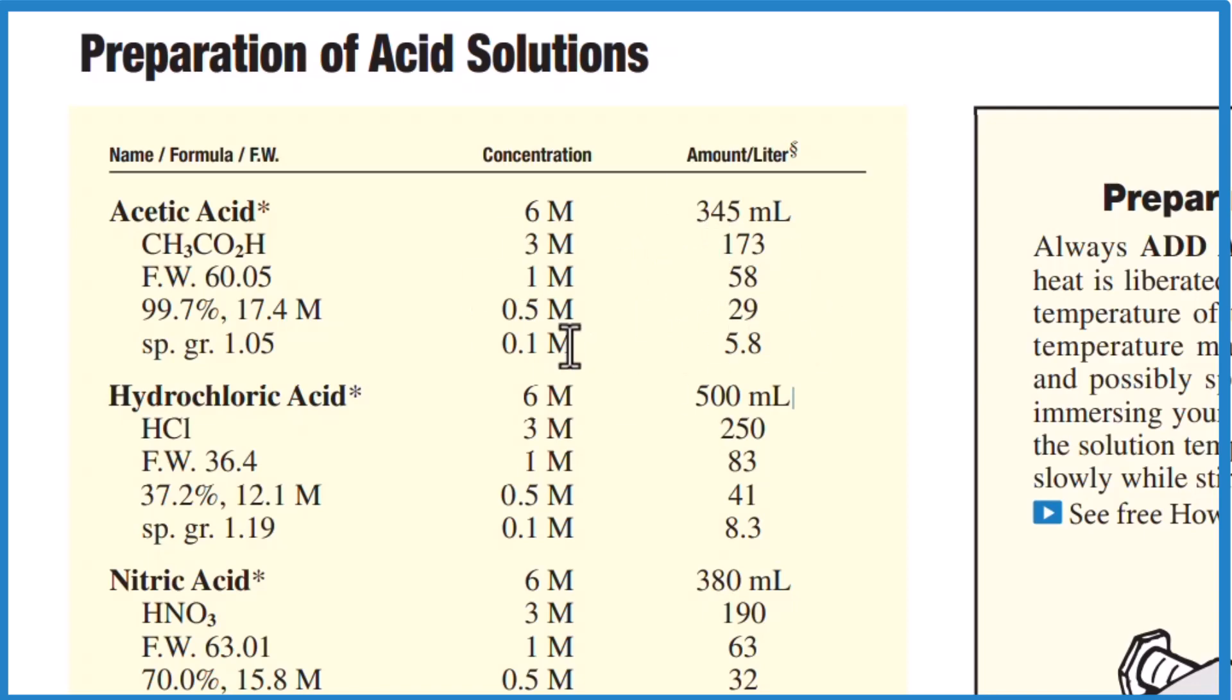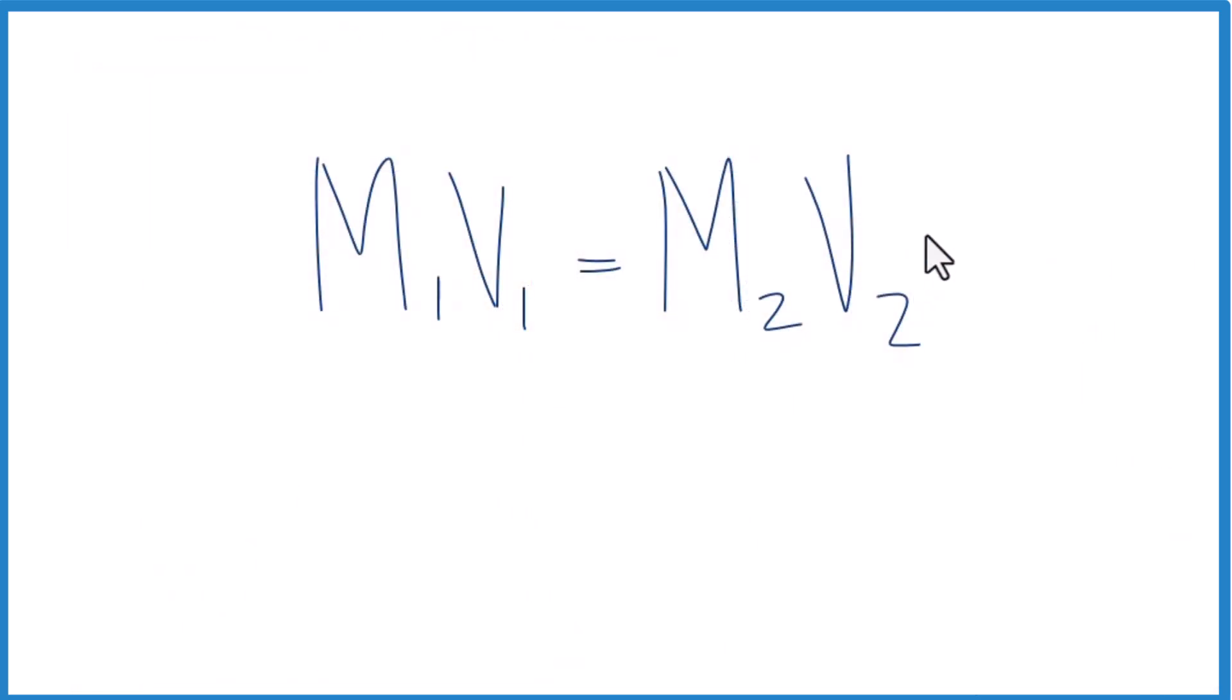Another way to do that is this. We can use this equation here to figure it out as well, because we know when we look at the bottle, it's 12 molar concentrated. If you're starting with concentrated hydrochloric acid, it's going to be 12 molar.